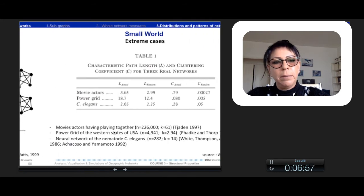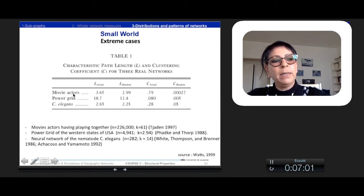they took some examples of movie actors having playing together, of power grid of the western state of U.S. and the C. elegans which is a neural network of the nematode. And they compare the average path length observed with the random one, which is always a little bit larger, as you see. But also the clustering coefficient observed with the random one, that they produce with the same number of nodes and average degree.